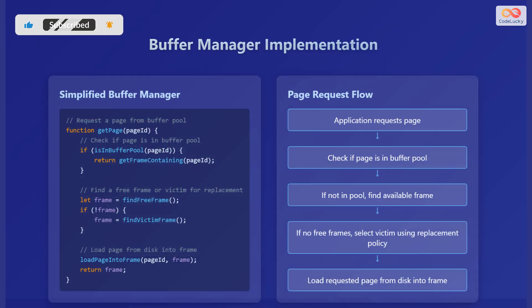Let's look at a simplified version of how a buffer manager might work. When an application needs a specific page of data, it requests it from the buffer pool. The buffer manager first checks if that page is already in the buffer pool. If it is, the buffer manager simply returns the frame containing that page.